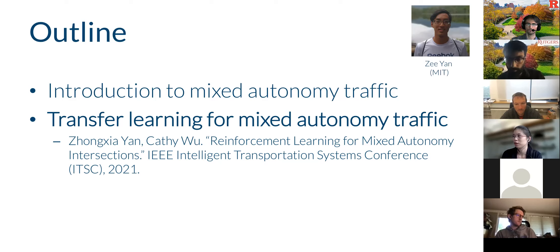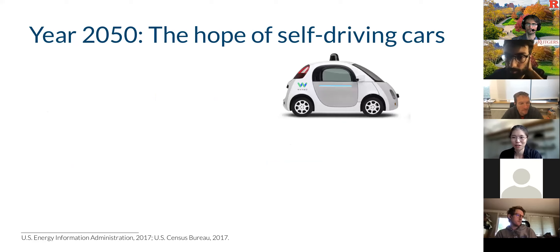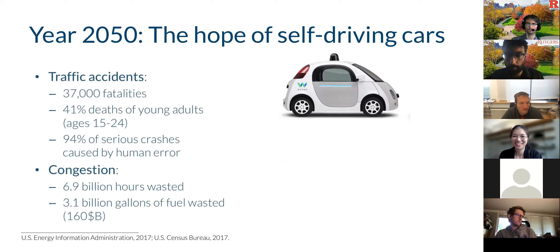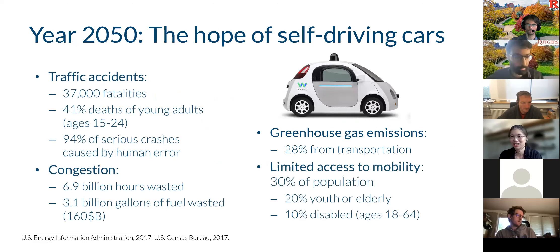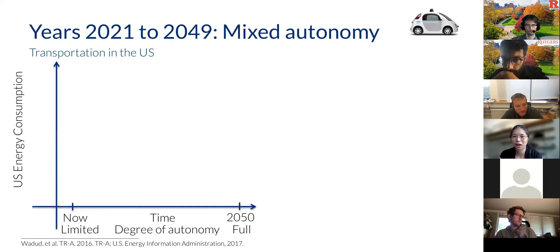The paper is called 'Reinforcement Learning for Mixed Autonomy Intersections.' We're excited about self-driving cars and their potential for safety, efficiency, greenhouse gas emissions reduction, and access. But the answer is not straightforward. There's a lot of uncertainty when it comes to what happens between now and when we have full autonomy systems, and hence we study mixed autonomy systems.